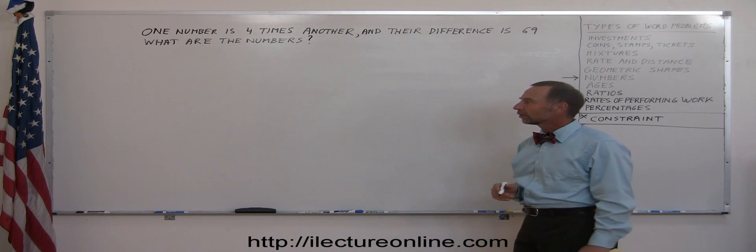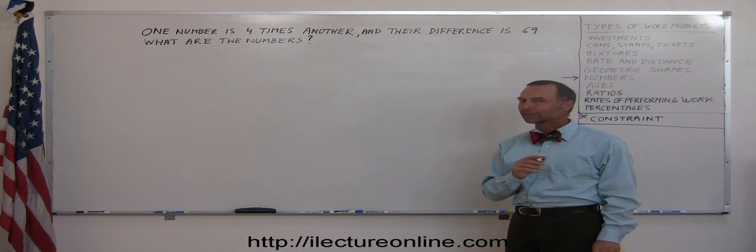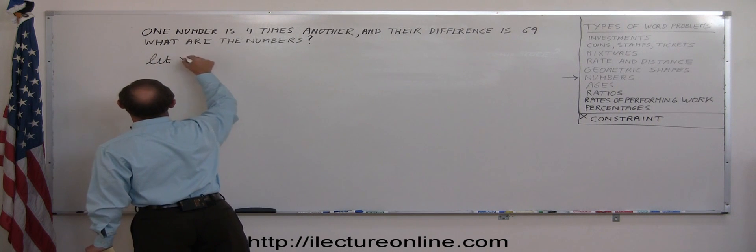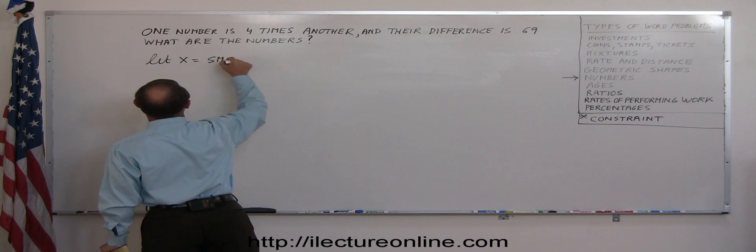So here we can assume we have two numbers. We're going to let x represent the smallest of the two. So let x equal the smallest of the two numbers.